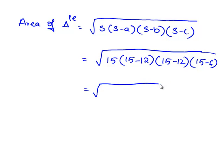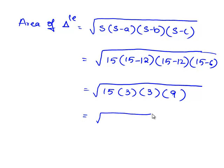Which is equal to square root of 15 times 3 times 3 times 9. This is equal to square root of 15 times 9 times 9. 9 squared can be brought out from the square root.